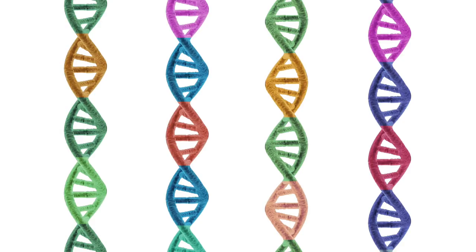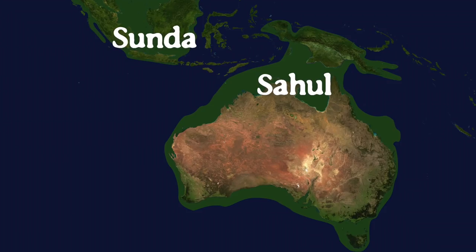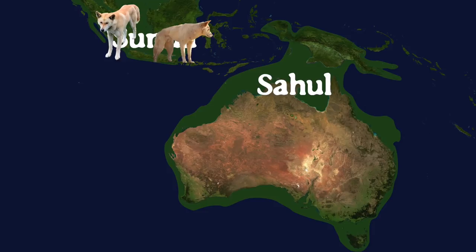The dingoes' ancestors spread through Sunda, modern-day Southeast Asia. To get from Sunda to Sahul, they may have had to travel with humans in boats, as there probably wasn't an easy way to get from continent to continent. But this is just an assumption and hasn't been proven.